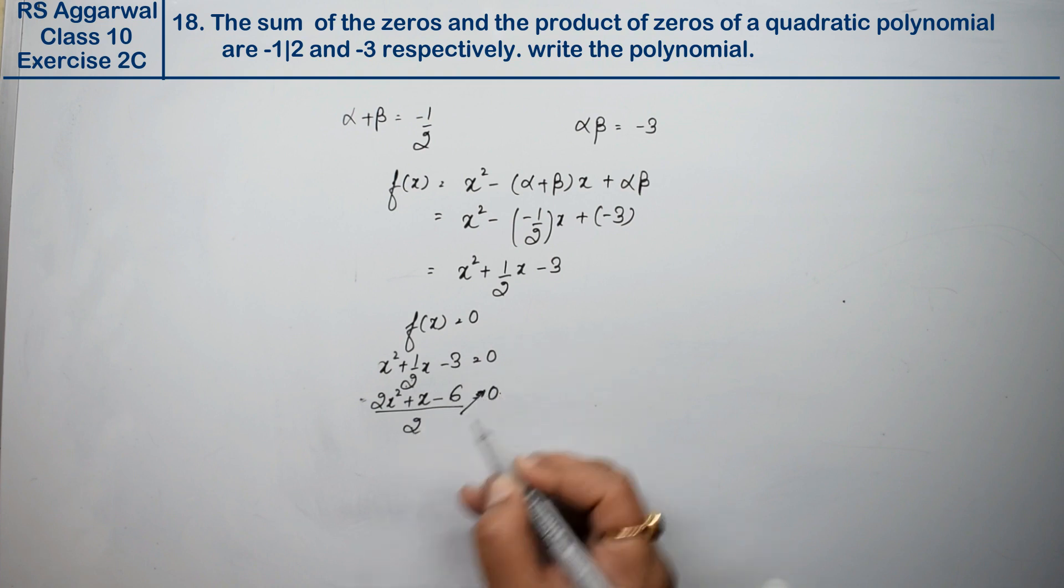This is the expression here, right? So this is the expression: 2x square plus x minus 6 equals to 0 is the answer. Thank you.